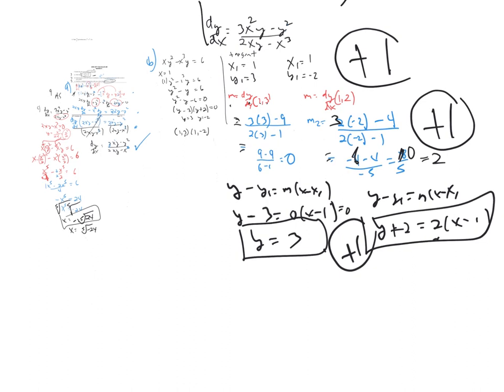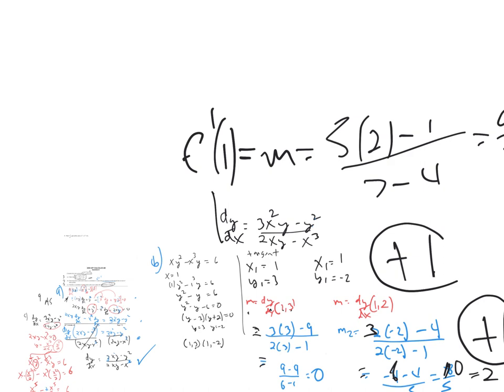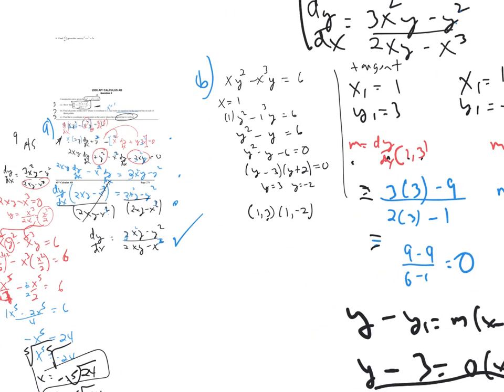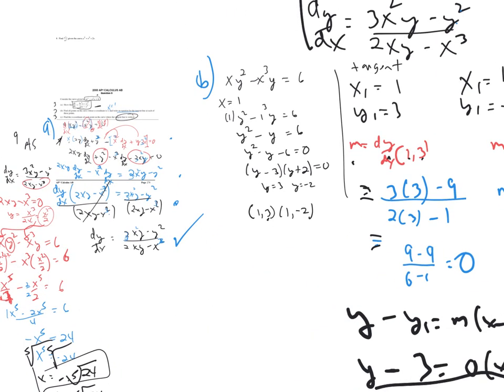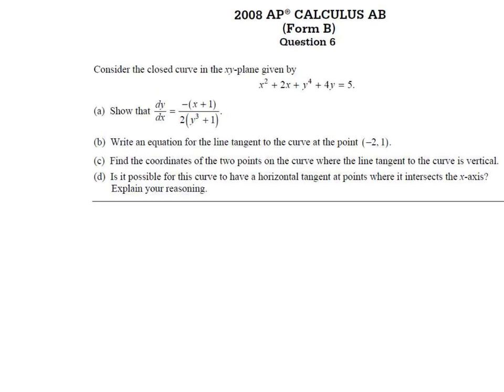That's a lot of work. Now you know why we didn't finish them all yesterday. The second problem came from 2008 — that one we just did. The first problem was from around 2000, and there used to be two different forms: Form B was for international students and Form A for the United States, because of time zone differences to prevent cheating.